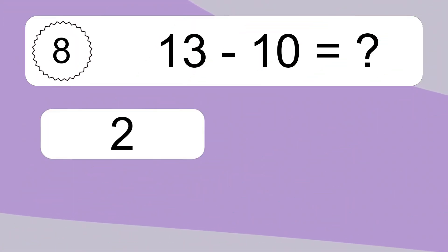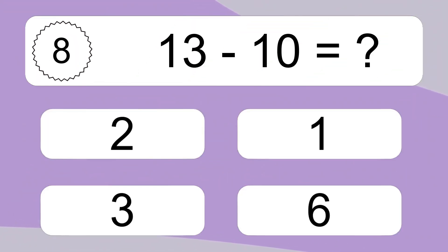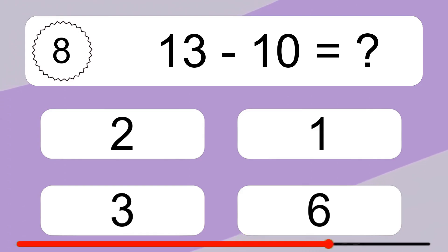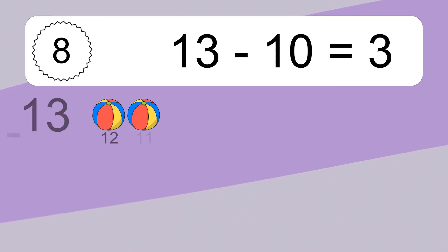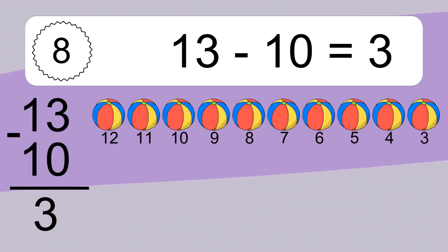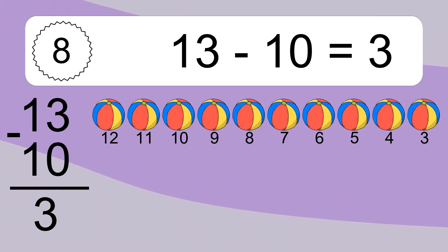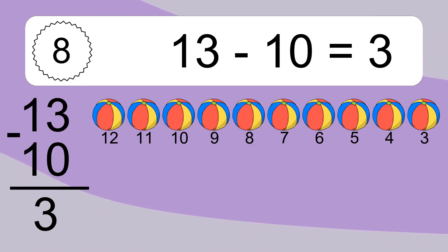13 minus 10 equals what? 13 minus 10 equals 3. Let's count it: 12, 11, 10, 9, 8, 7, 6, 5, 4, 3.